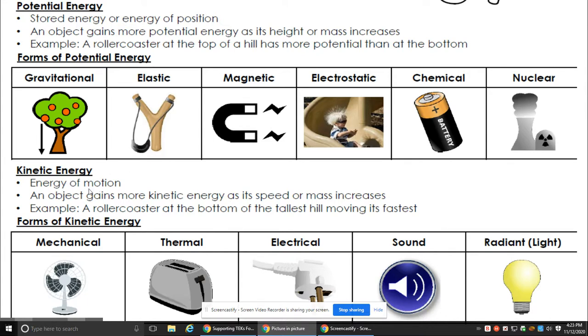Kinetic energy is energy of motion. An object gains more kinetic energy as its speed or mass increases. Example: a roller coaster at the bottom of the tallest hill moving its fastest.